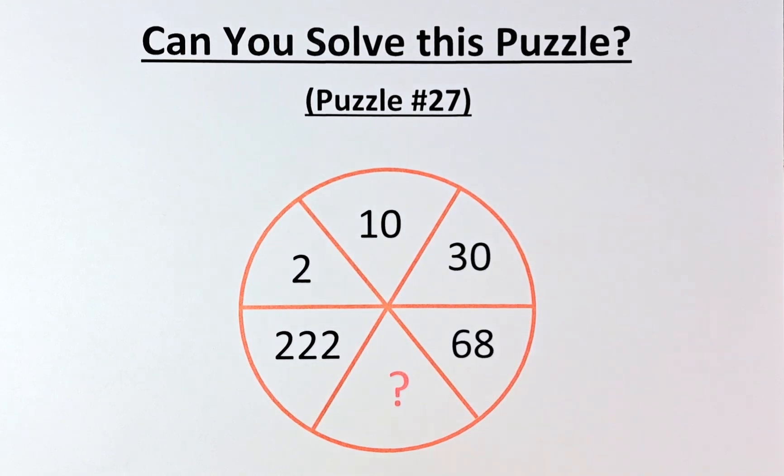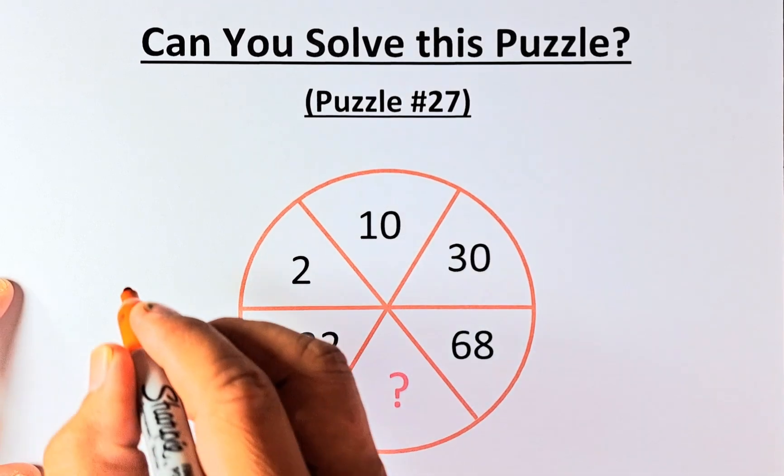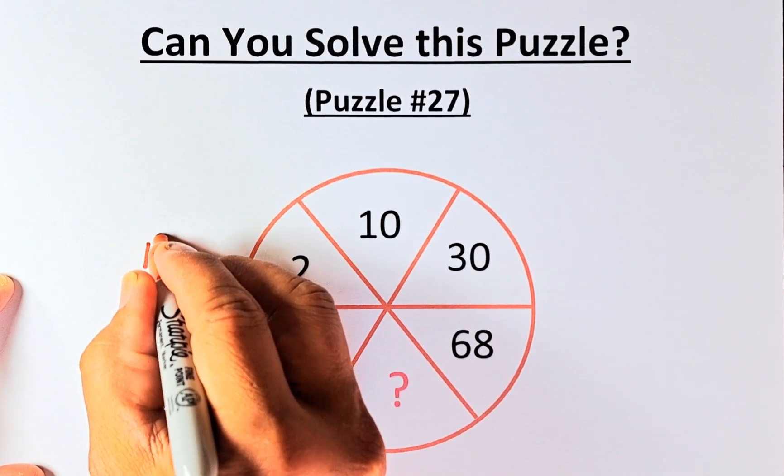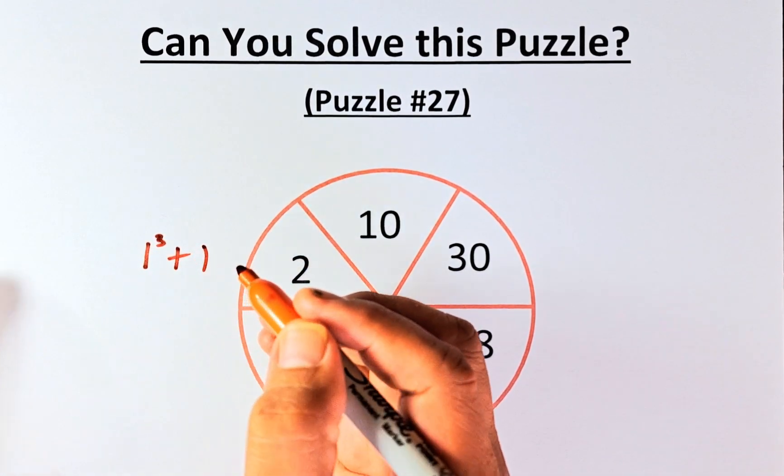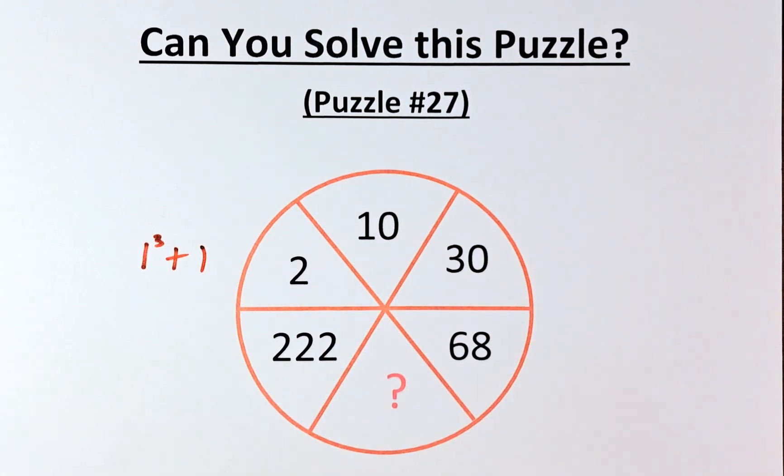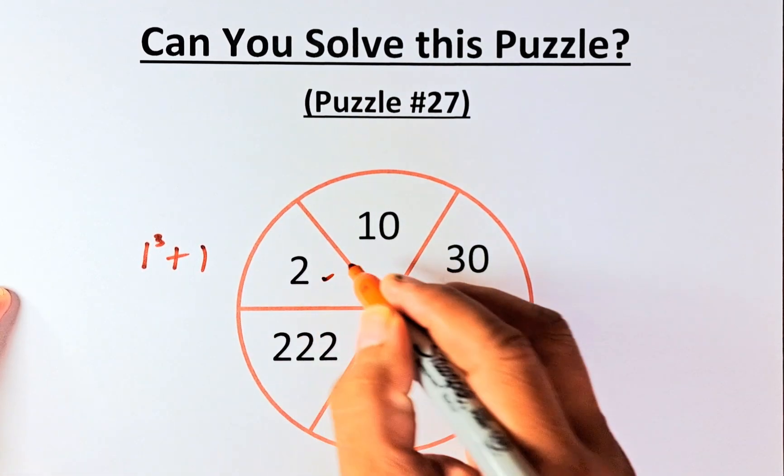So what is 2? 2 is actually made up of 1 cube plus 1. 1 cube is still 1 plus 1 is going to give you 2.